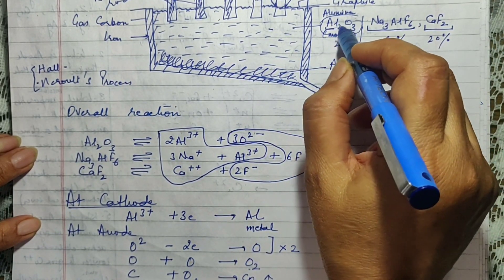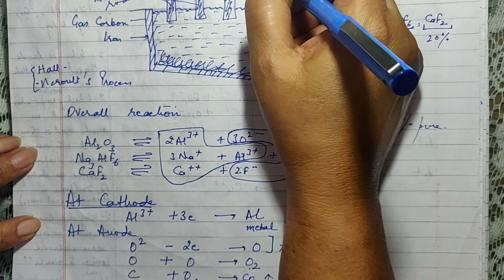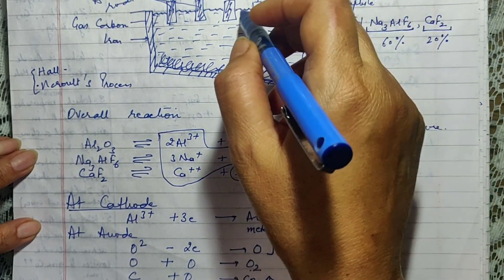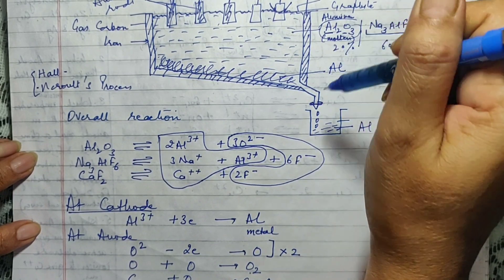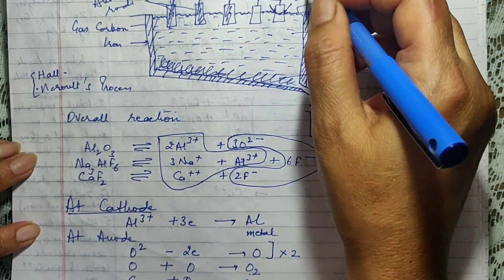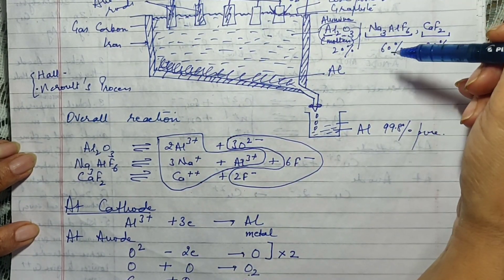Now, after a while, when the composition of alumina becomes very less, then this bulb begins to glow. The glowing of the bulb is because the resistance of the circuit becomes very less because one of the component in the mixture has been used up. So the glowing of the bulb is actually an indication that we need to stop the reaction and refresh the process by adding more of alumina.